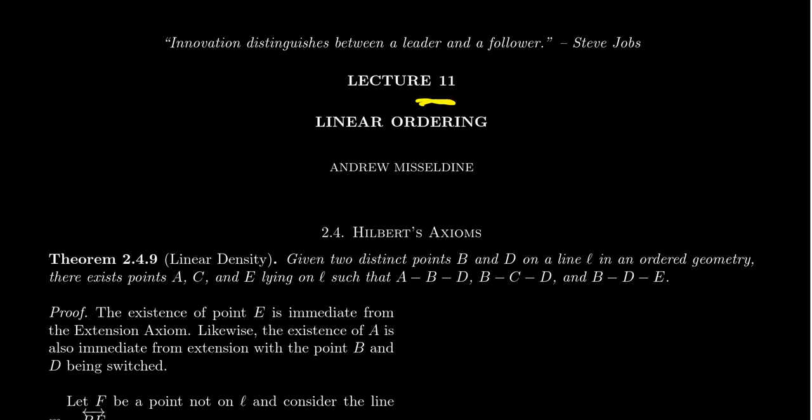In lecture 11, we're going to continue our discussion of the betweenness axioms, which we introduced in lecture 10. You'll recall that an incidence geometry which satisfies the four axioms of betweenness is called an ordered geometry. We want to get through the very technical argument that every line in an ordered geometry can be given an ordering.